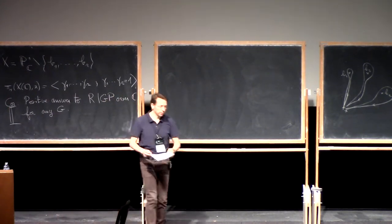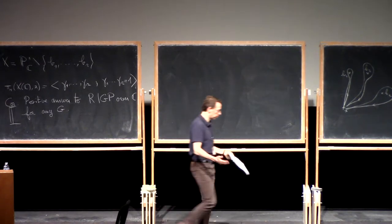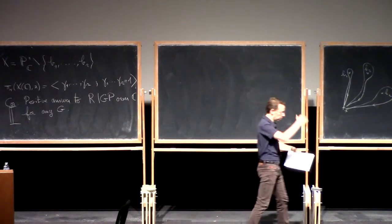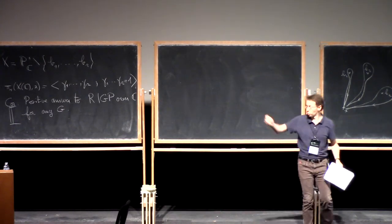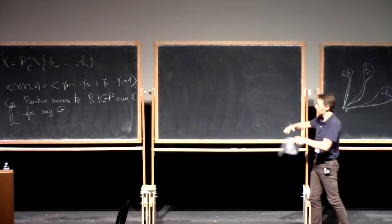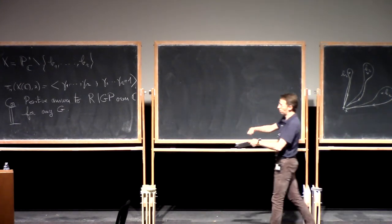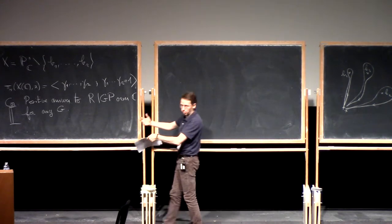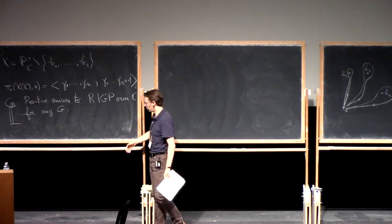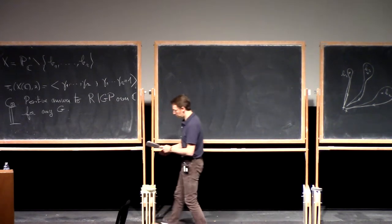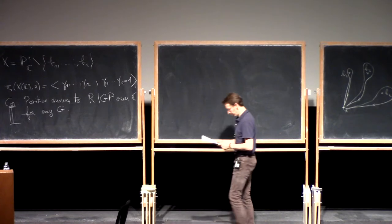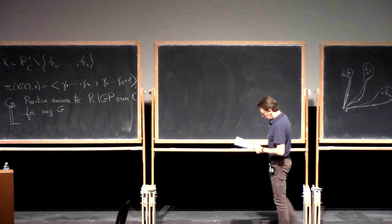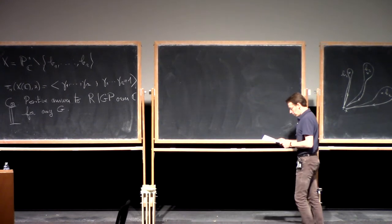You pick r large enough, you choose the gᵢ's — this gives you a topological covering — and by Riemann's existence theorem you can algebraize it and get your cover.